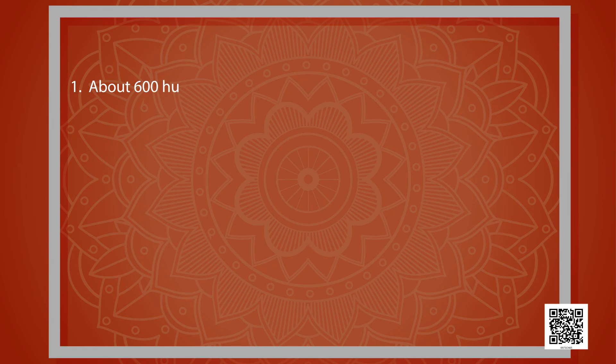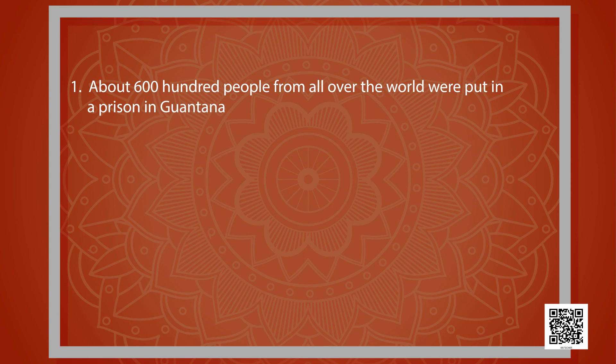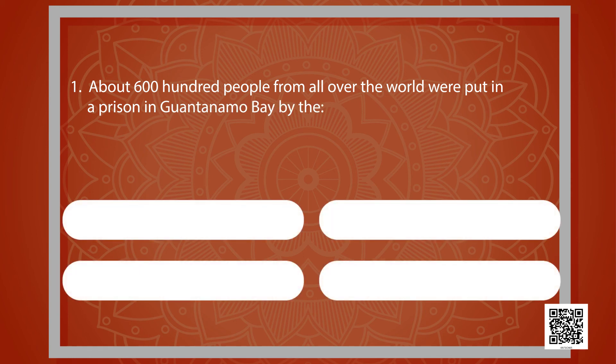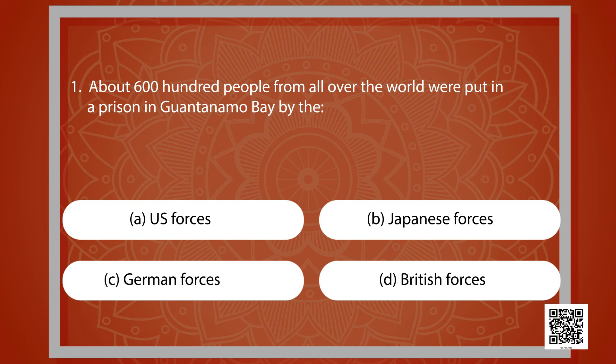Hope today's session was fruitful for you. Let's try to analyze what we have learned. On your screens, you have a question with four options — let's pick the correct option. About 600 people from all over the world were put in a prison in Guantanamo Bay by which forces? U.S. forces, Japanese forces, German forces, or British forces? The answer is U.S. forces — it was done because they suspected these people had a connection to 9-11.